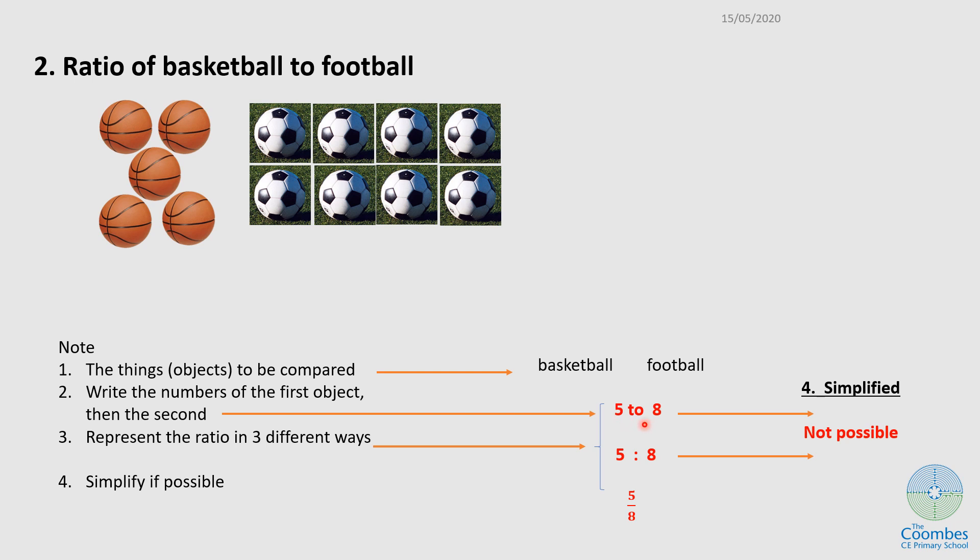And the three different ways we can write ratios. We can write it as the number here, or we can say five is to eight, colon eight, or as a fraction, five over eight. Now there is no common factor between five and eight, so this cannot be simplified. I'll leave it as it is.